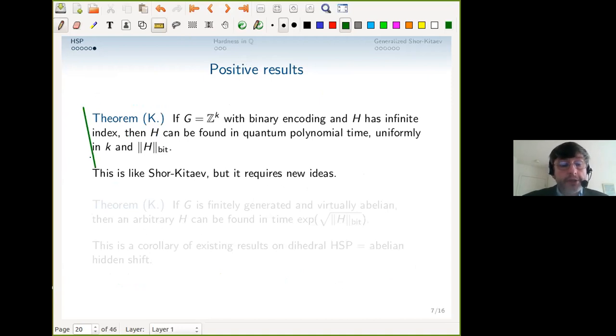Turning to positive results, the one I ended up working hardest on is generalized Shor-Kitaev, where H can have infinite index or lower rank. The result I got is that you can find a hidden subgroup even if you have deficient rank periodicity, again uniformly polynomial time in all parameters—the bit complexity of H and the dimension.